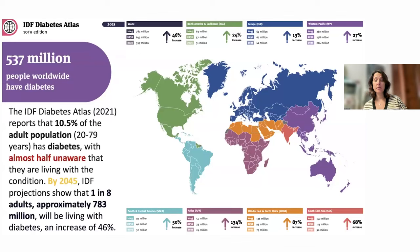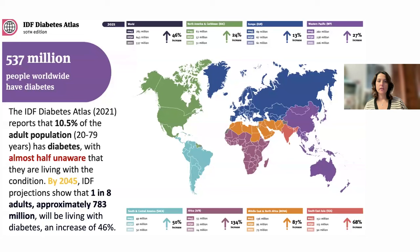Right now, about 10% of the adult population worldwide is suffering from diabetes, but almost half of that 10% is unaware of this condition. That's a big issue, especially for screening, diagnosis, and treatment. By 2045, the number of adults with diabetes is expected to be about 783 million — that's about one in eight adults worldwide.